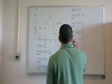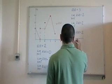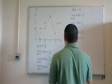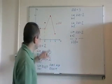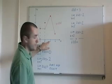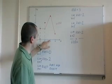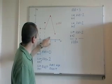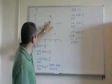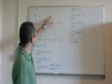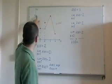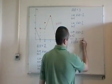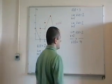Let's look at f of 3. When x is 3, travel up to where it hits the curve — it hits here — then travel across, and it has a y value of 4.